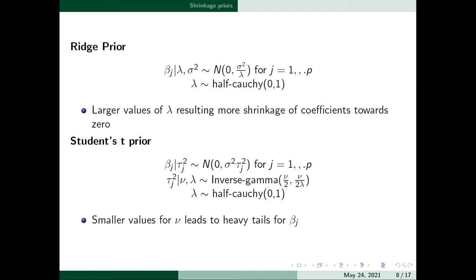The paper defines several shrinkage priors for the beta coefficients. The simplest is the Ridge prior, under which the conditional distribution for beta follows a normal distribution with mean zero and variance sigma squared divided by lambda, where lambda follows a half-Cauchy distribution.